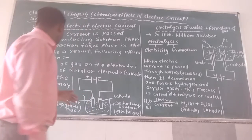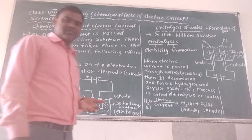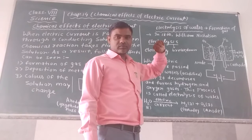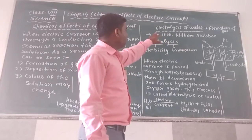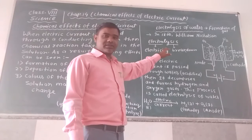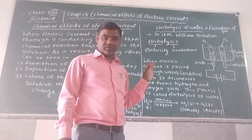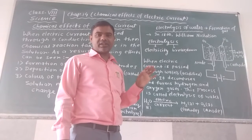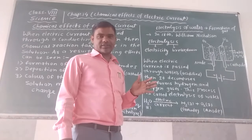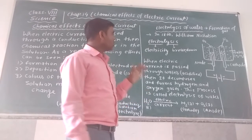Now let us see how gases are formed when electric current is passed through a conducting solution — let us see the process of electrolysis of water. The word electrolysis: 'electro' means electricity and 'lysis' means breakdown. So the meaning of electrolysis is the breakdown of a substance by means of electricity. That means when electricity passes through a conducting solution, it will split, decompose, and form two substances. The breakdown of a substance on passing electricity through it is known as electrolysis.